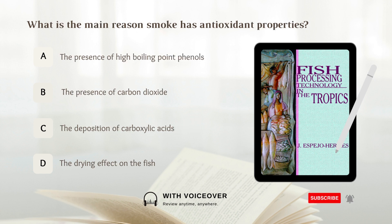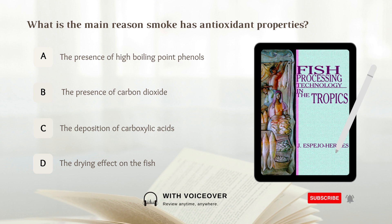What is the main reason smoke has antioxidant properties? A. The presence of high boiling point phenols. B. The presence of carbon dioxide. C. The deposition of carboxylic acids. D. The drying effect on the fish. Answer: A. The presence of high boiling point phenols.